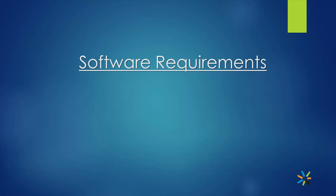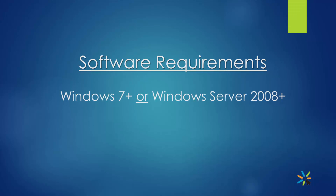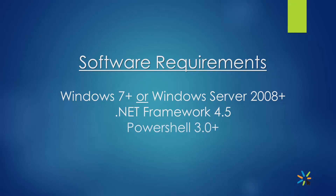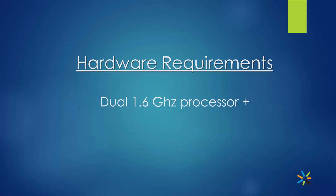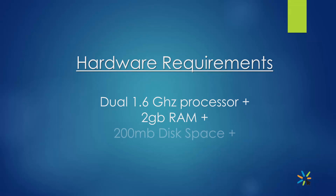In order to install Password State, you will need to have the following system requirements: a Windows-based operating system with .NET Framework 4.5 and PowerShell 3 or above; a Microsoft SQL Server 2008 Express database or above; a dual-core 1.6GHz processor or higher; a minimum of 2GB of RAM; and a minimum of 200MB of disk space.